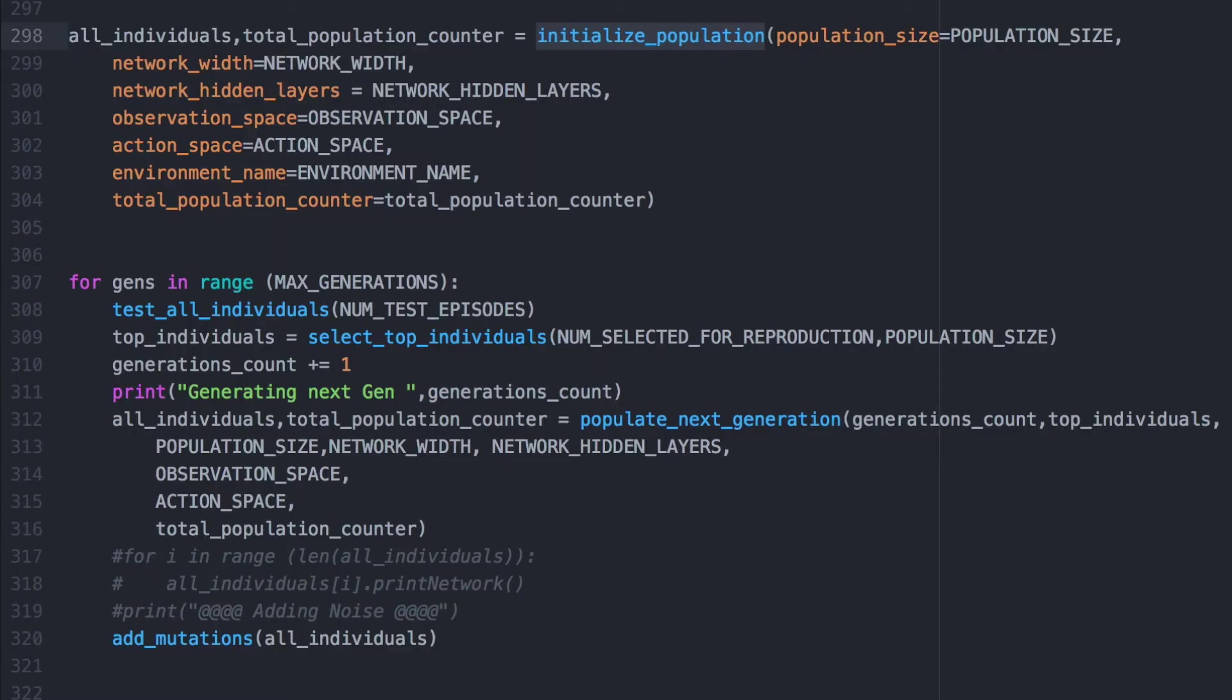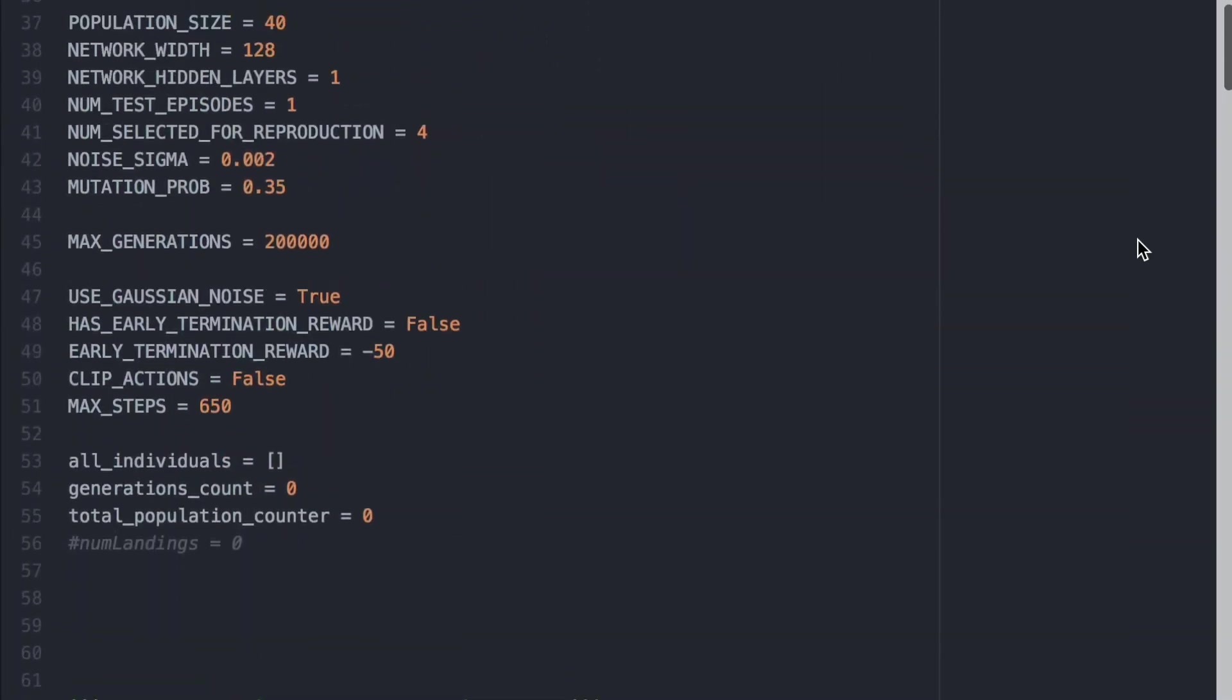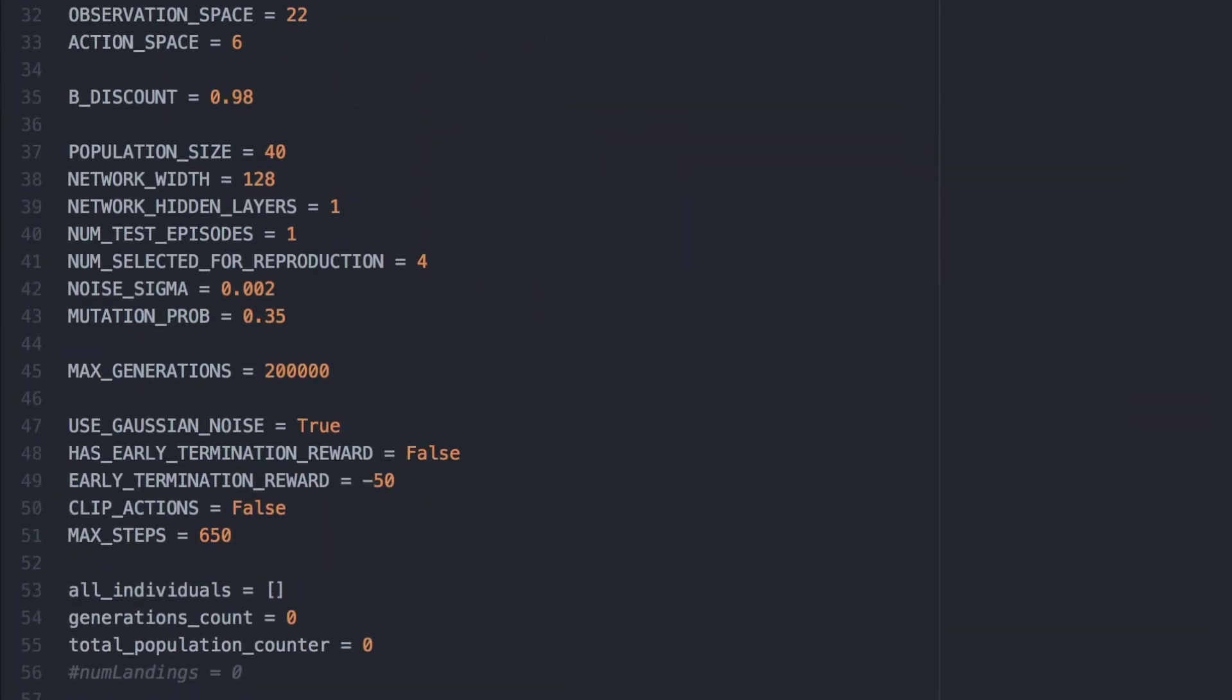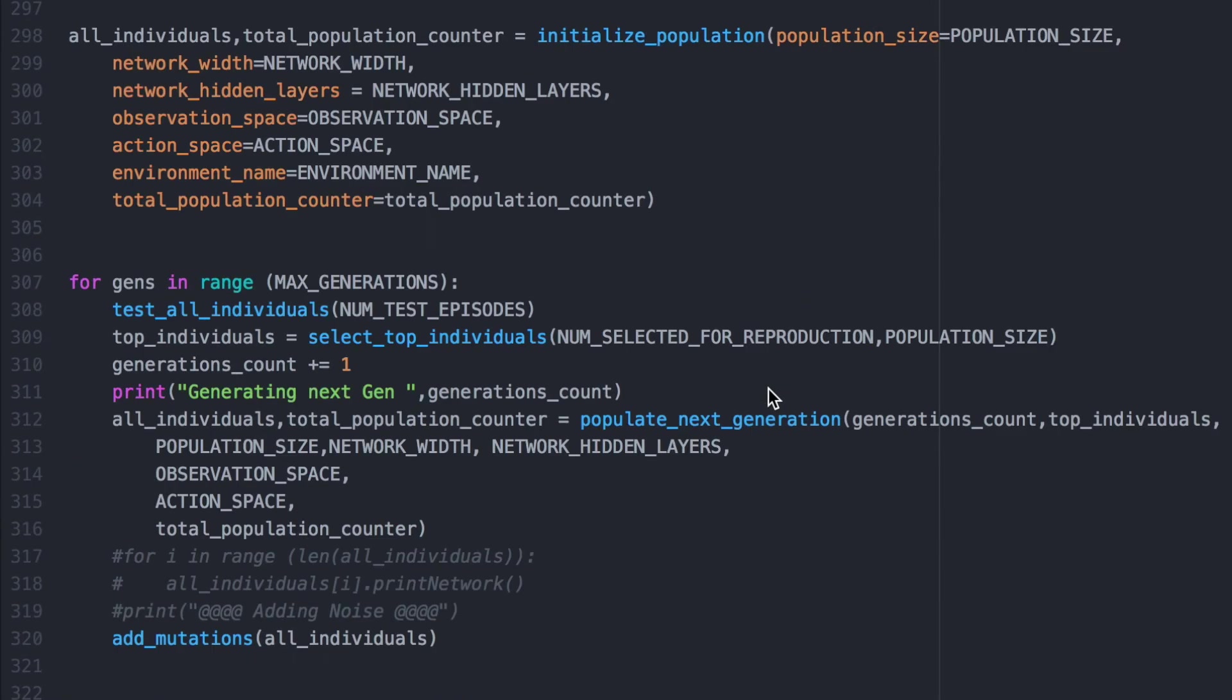Now let's initialize our population. We will create a list that holds all individuals. We will also declare useful constants and variables such as the number of individuals per generation, the maximum number of generations, the number of features—in our case neurons and weights—noise sigma, the degree with which a feature can mutate, the probability of mutating an individual's gene, and other miscellaneous variables.